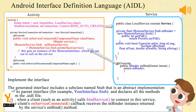Implementing the interface: the generated interface includes a subclass named Stub that is an abstract implementation of its parent interface — for example, YourInterface.Stub — and declares all the methods from the .aidl file. When a client such as an Activity calls BindService to connect to this service, the client's onServiceConnected callback receives the mBinder instance returned by the service's onBind method.